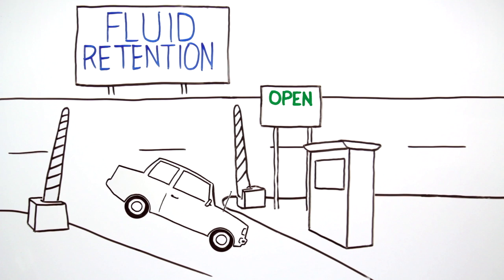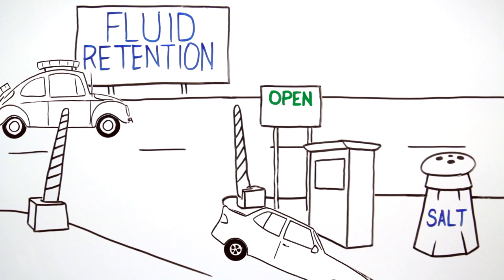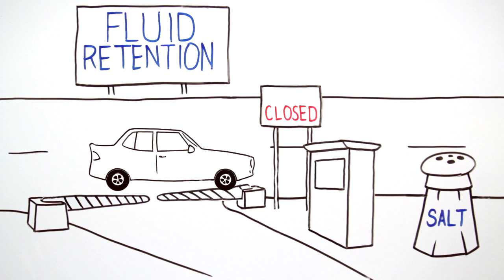The final phase of fluid replacement is retention, which involves keeping fluid in the body to allow for rehydration. Salt intake is important in this phase because it's the primary electrolyte in the blood. It helps maintain blood sodium levels and tells the kidneys to retain rather than excrete the fluid ingested.